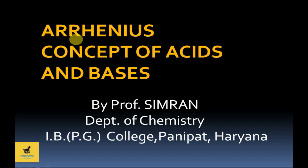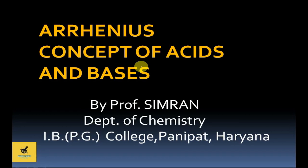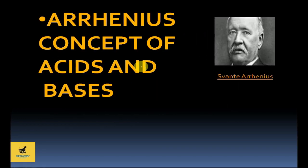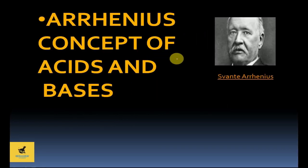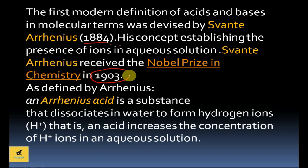Hello friends, today my topic is the Arrhenius concept of acids and bases. This concept was given by Svante Arrhenius, who in 1884 gave the modern definition of acid and base. He also received the Nobel Prize in 1903.